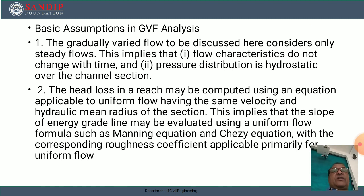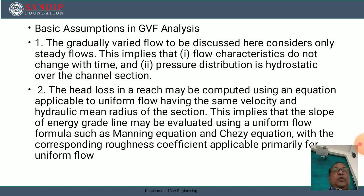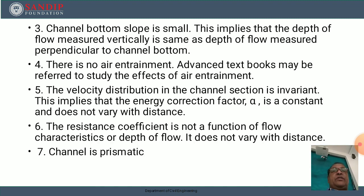The basic assumptions in case of gradually varied flow: characteristics do not change with time, and the pressure distribution is hydrostatic in the channel cross-section. The head loss in a reach may be calculated using an equation applicable to uniform flow having the same velocity and hydraulic mean radius of the section. This implies that the slope of the energy grade line may be evaluated using a uniform flow formula, such as Manning's formula and Chezy's formula, with the corresponding roughness coefficient — that is Chezy's constant or Manning's roughness coefficient n. The channel bottom slope is small, which implies that the depth of flow measured vertically is the same as the depth of flow measured perpendicular to the channel bottom.